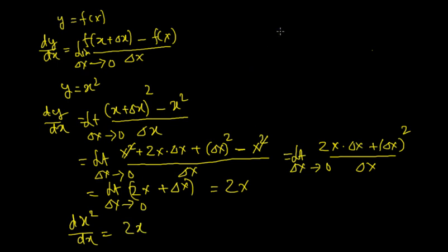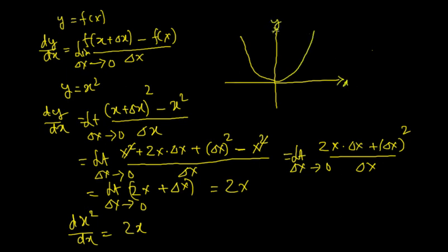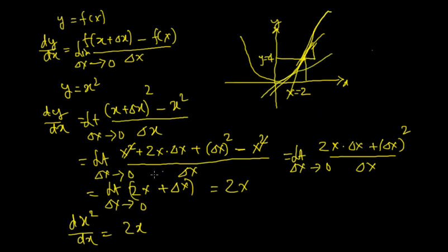What this really means is: if you have the function y = x², it looks like a parabola when you draw it on a graph. At any point — say x = 2 — the rate of change of y is 4. The tangent at that point represents the slope dy/dx, which gets more and more steep as x increases. So the result is 2x. Hope you enjoyed this tutorial — I'll see you in the next class.